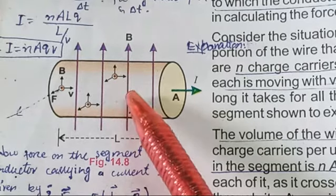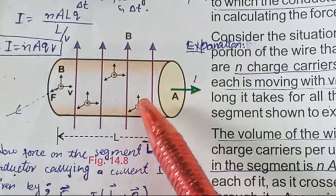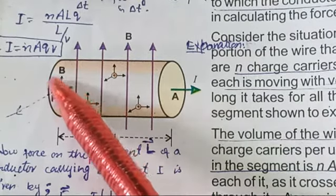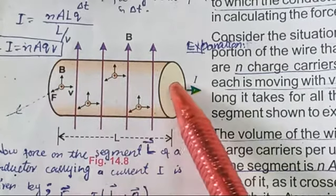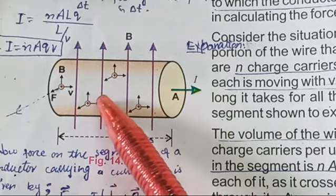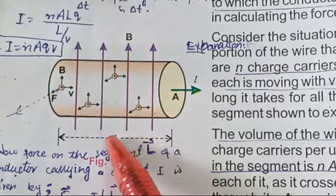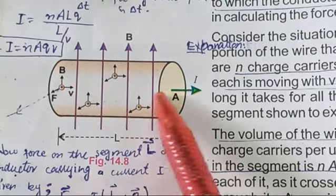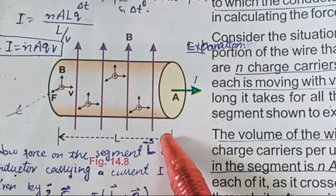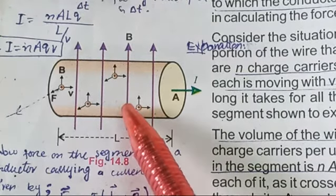If Q is a charge carrier, then total charge is represented by N·A·L·Q. The time taken by one charge to travel from one side to the other was calculated using the formula S = V·ΔT, where this distance S is replaced by the length L of the wire segment, giving us L = V·ΔT, so ΔT = L/V.